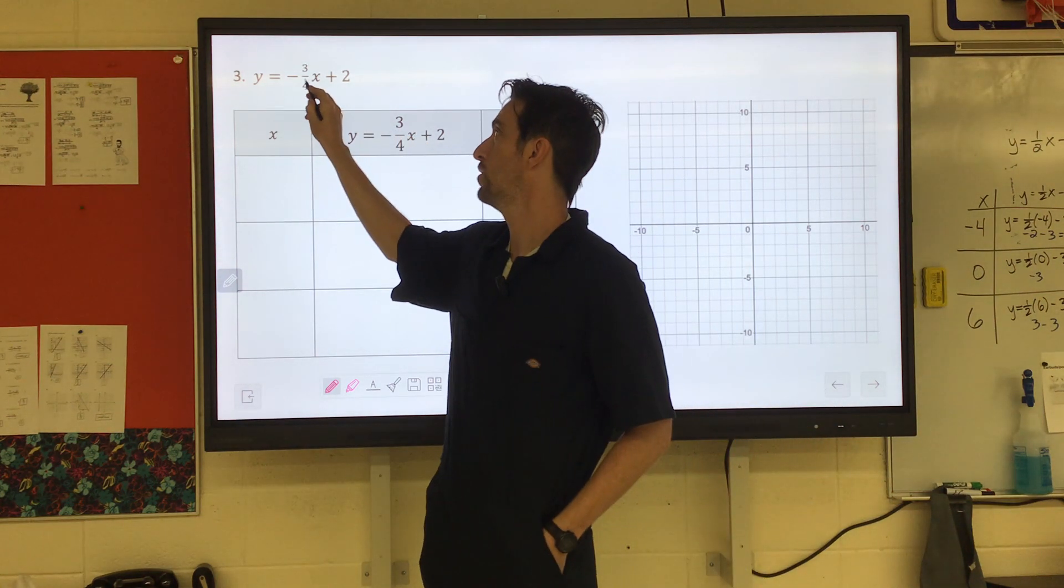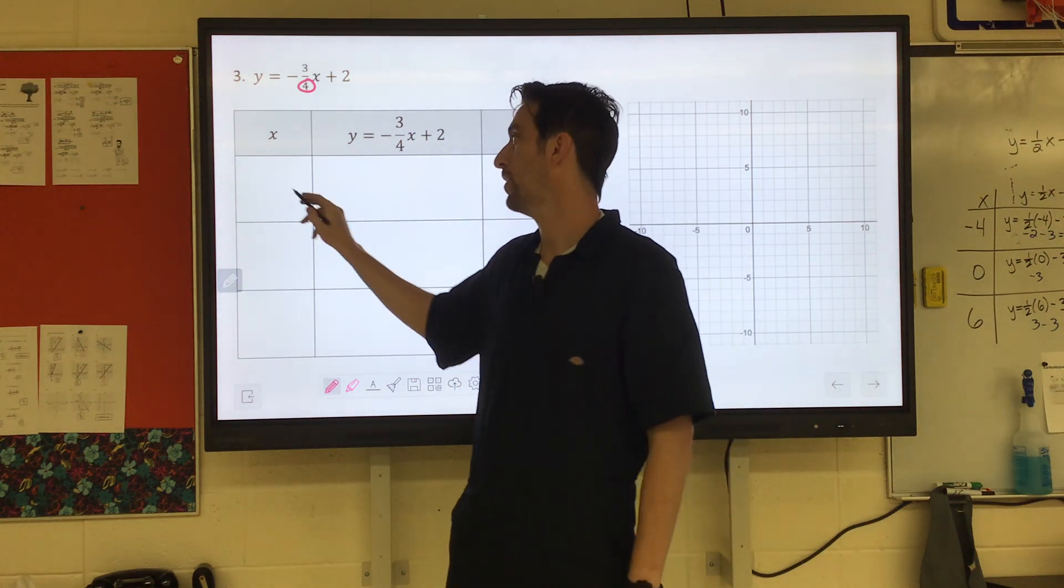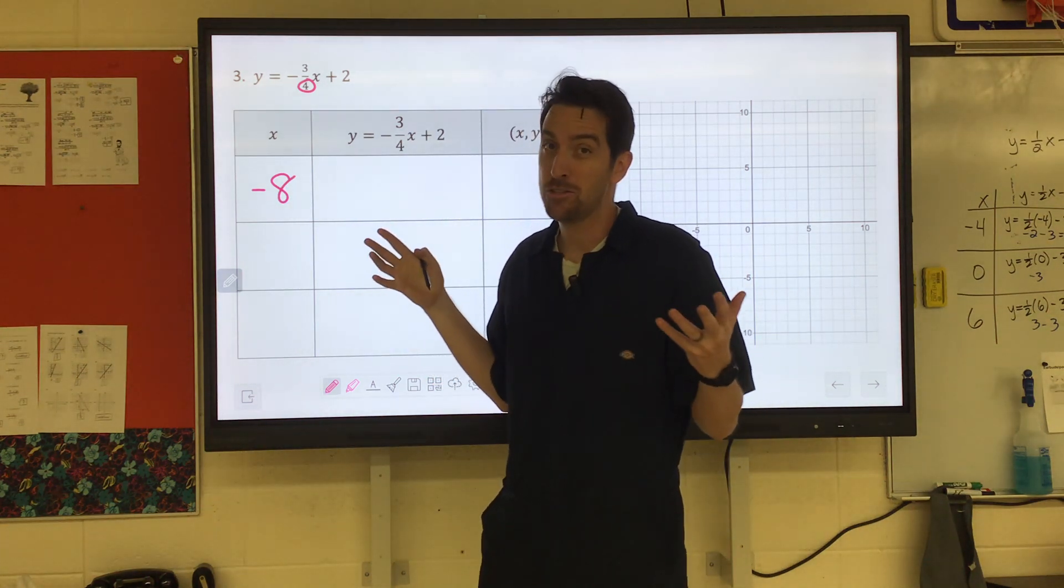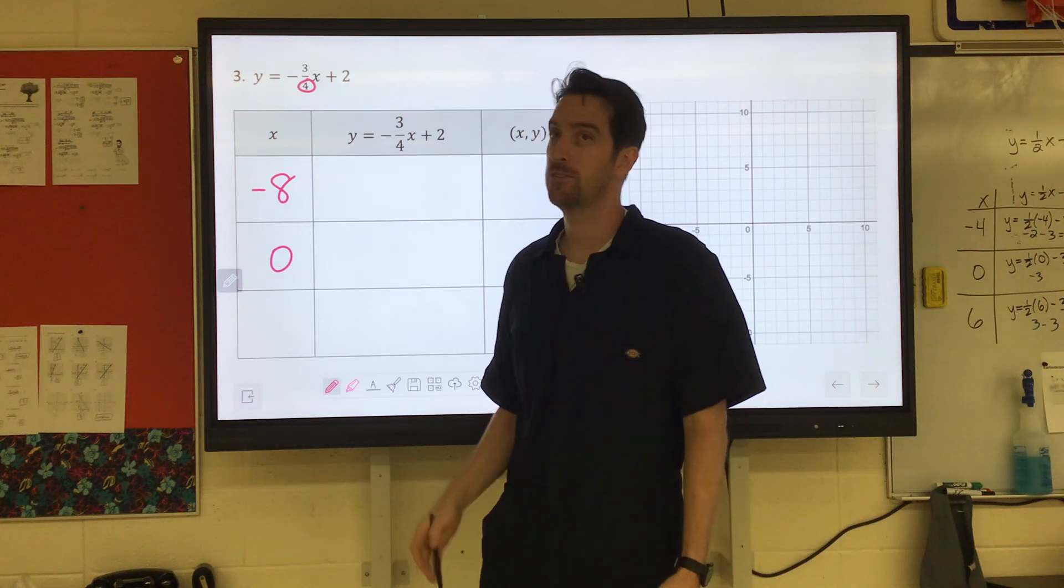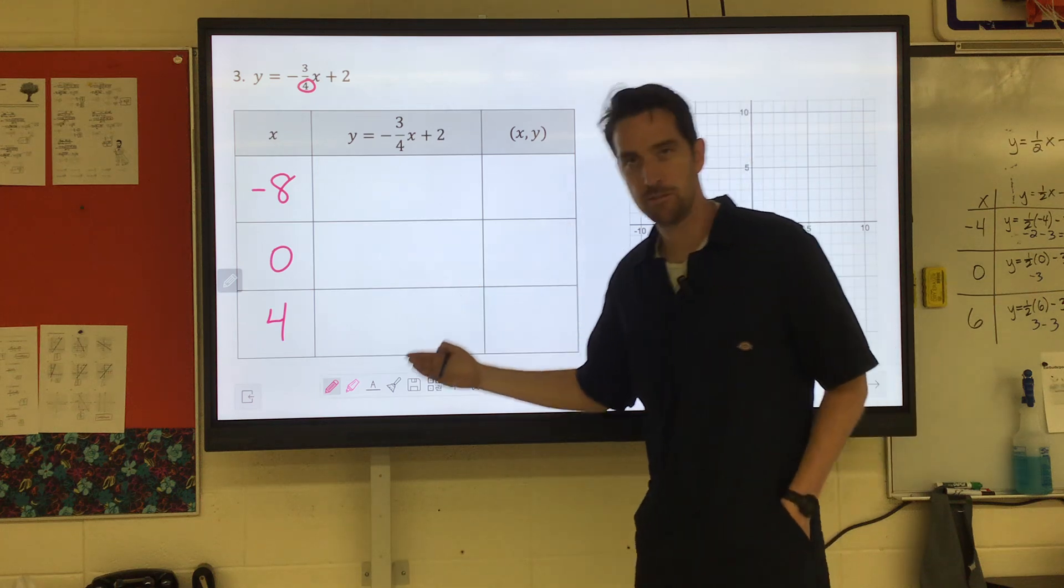When we have fractions like this in front of the x, couldn't recommend enough that you pick multiples of the denominator. So I would pick multiples of four, so maybe I would choose like negative eight. I always choose zero because it's easy to work with, and then if I was to choose a positive one that's a multiple of four, we could pick positive four.